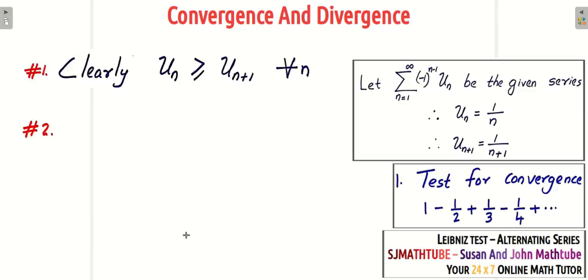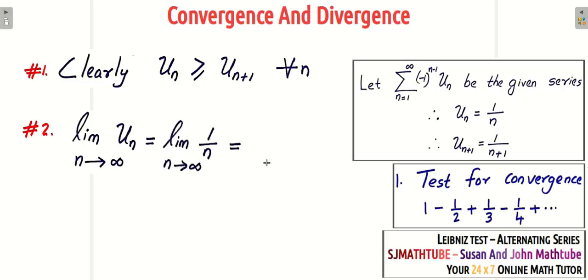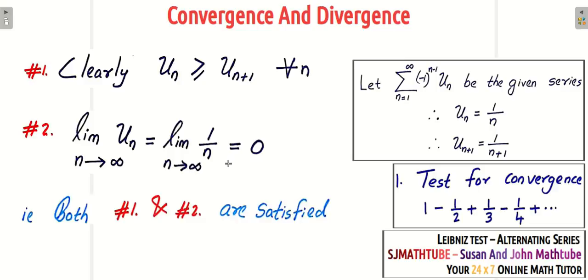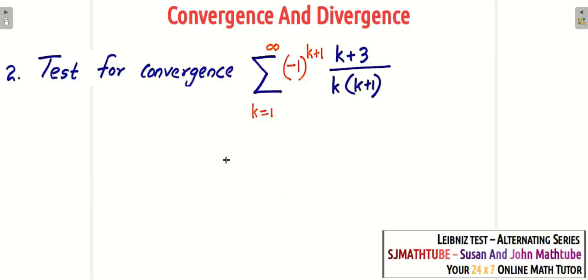Now the second condition: we find the limit as n tends to infinity of un. Our un is 1/n, and substituting infinity gives 0. Both conditions are satisfied, and that implies our series is convergent.